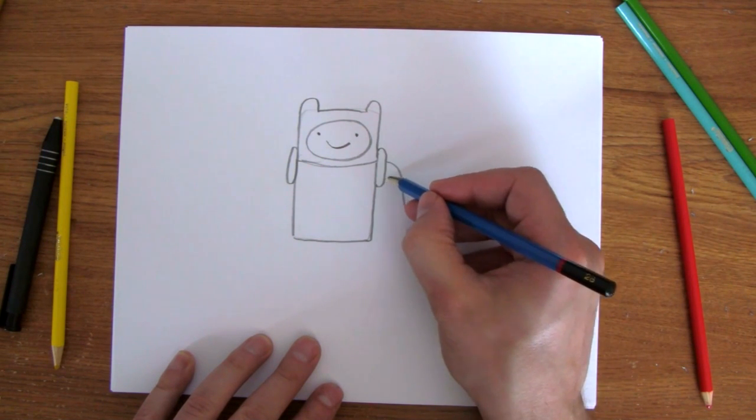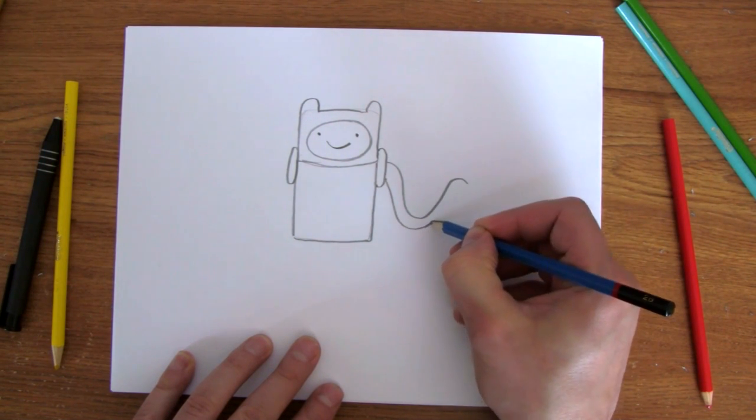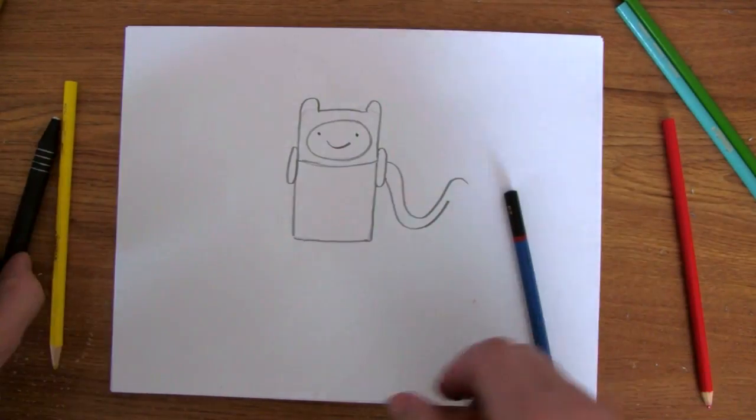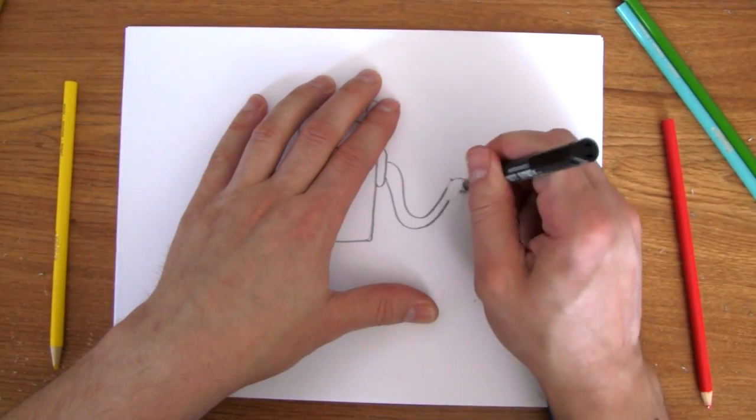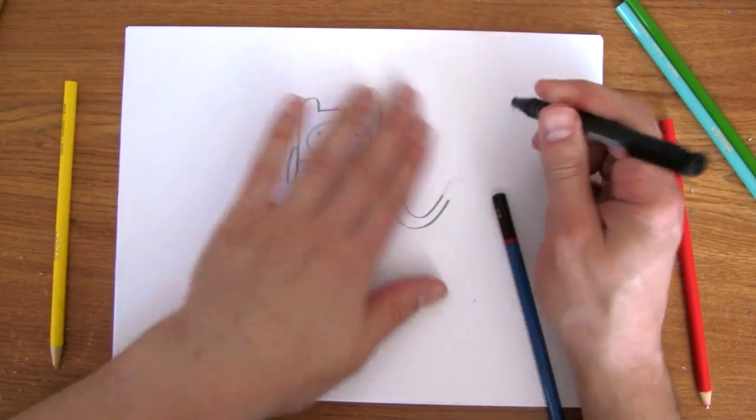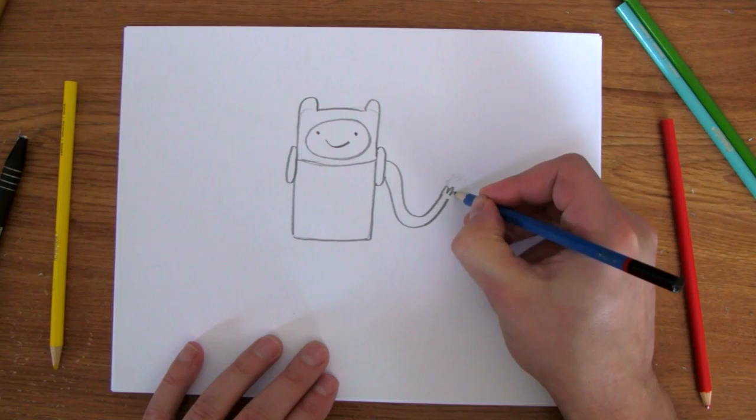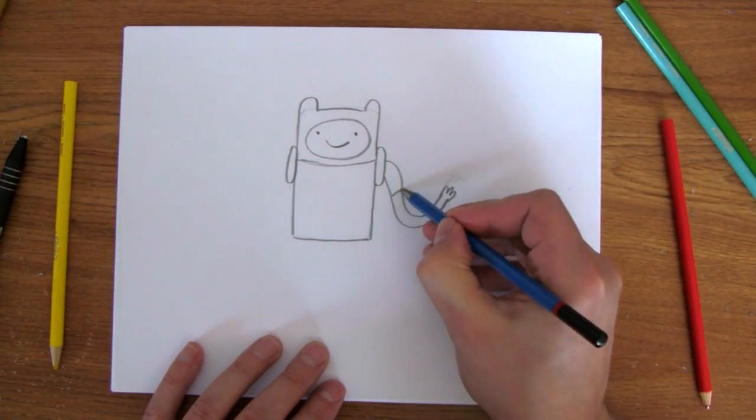And I didn't really want to draw that like that. He's got three fingers. There we go. This is his sleeve.